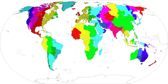UTC plus 2 is an identifier for a time offset from UTC of plus 2 hours. In ISO 8601, the associated time would be written as 27 November 2018, T 1 hour 29 minutes and 47 seconds plus 2. This time is used in the following regions.